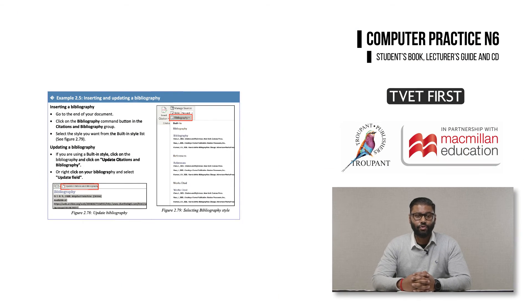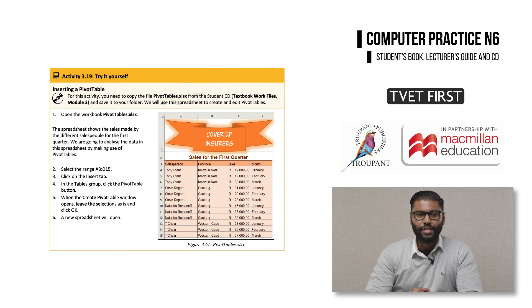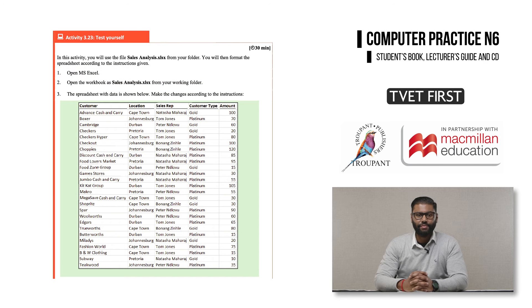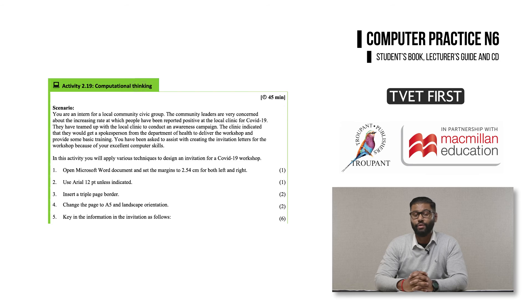The TVET First Book focuses on exam readiness because it is essential that students are well prepared for the exam. The book offers more than 100 activities and examples with a structured teaching approach that begins with lecturer-led worked examples to introduce new concepts. The book has try-it-yourself activities which are practical activities to reinforce learning. Students do these activities independently using the work files provided and following the step-by-step procedures. The next level of activity is the test-yourself activities which prepare the students for assignment and test level questions. The computational thinking activities are designed to improve students' problem-solving abilities.